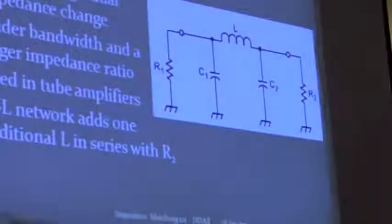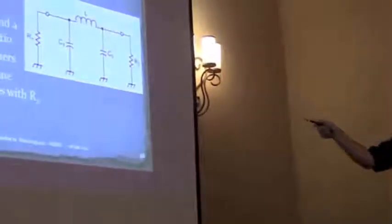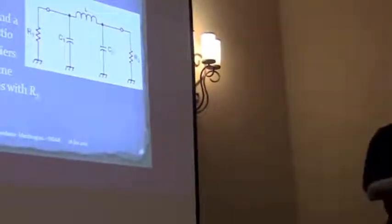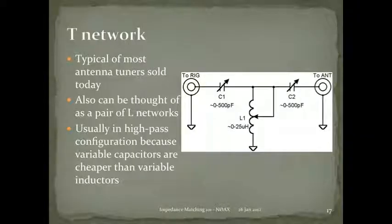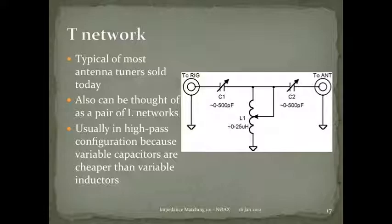You could match a large impedance ratio with one L-network, but it would be very touchy and sensitive. A pi network gives better results. If you add an output inductor in series — the pi-L configuration — you get additional harmonic suppression, which is used in some amplifier designs.